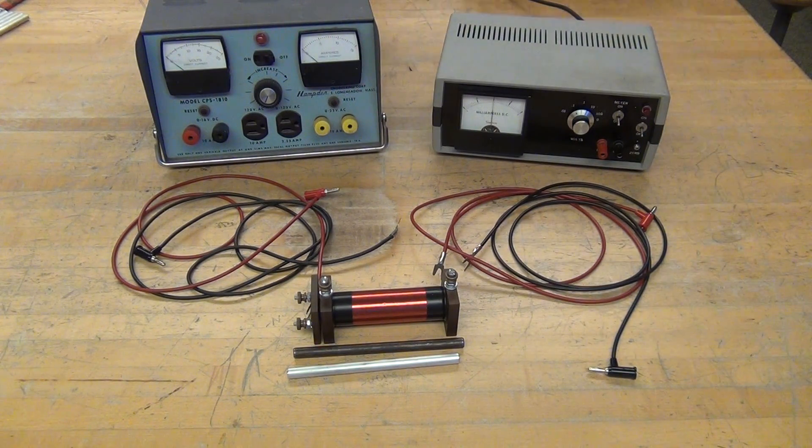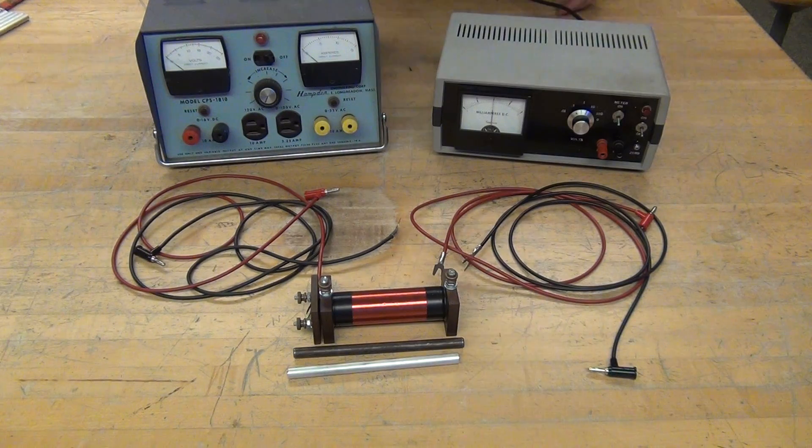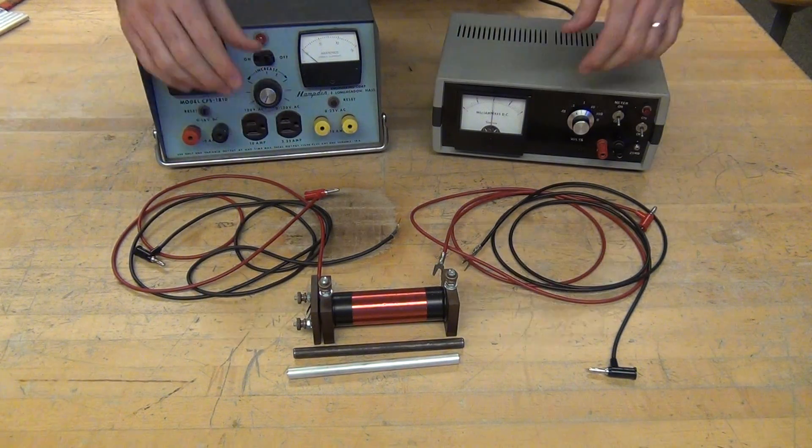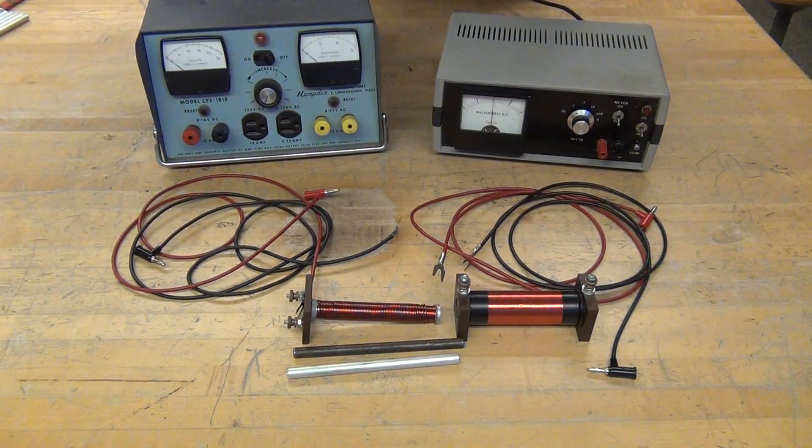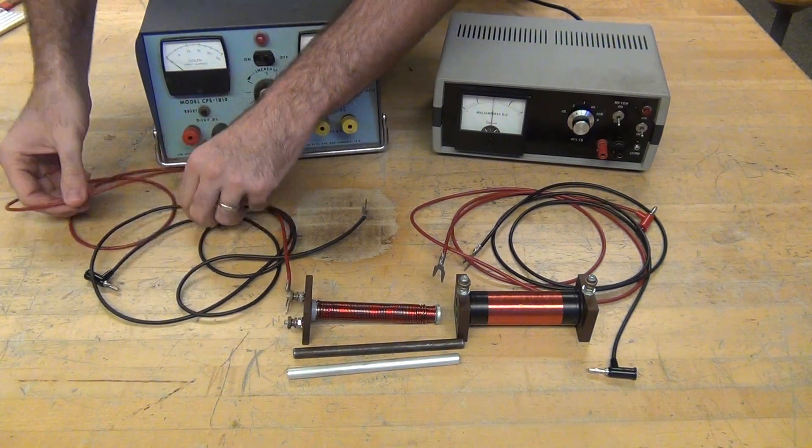A changing magnetic field can create currents, and currents can create magnetic fields. So we can create a changing magnetic field by turning on or off currents or by moving a magnet.